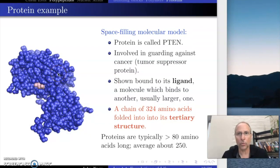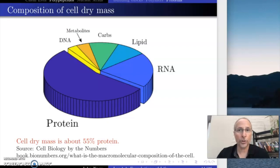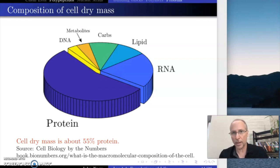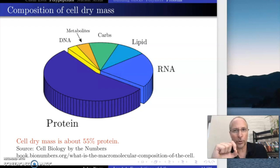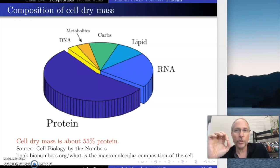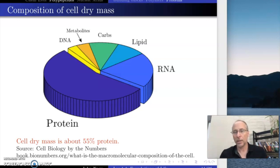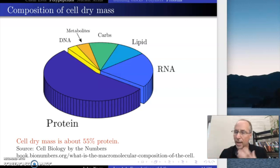That's our introduction to the structure of proteins. What I want to do now is try to convince you that proteins really are as important as I say. What I want to do is look at what your body is made out of — the types of molecules your body is made of without the water. Let's get rid of all the water, and what we're left with is called dry mass — all the stuff that's not water in your body.